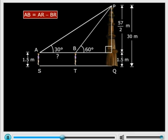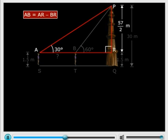Now we are ready to solve this question. Look at triangle PAR. tan 30°, what will that be equal to? Opposite by adjacent, PR by AR.